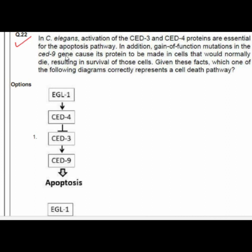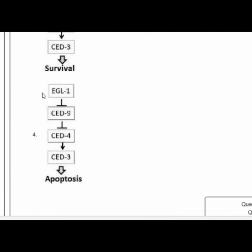Question 22: In C. elegans, activation of CED-3 and CED-4 proteins is essential for apoptosis. Gain-of-function mutation in CED-9 causes cell survival in cells that would normally die. Option 4 correctly represents the cell death pathway: EGL-1 inhibits CED-9, which inhibits CED-4, which activates CED-3, causing apoptosis.